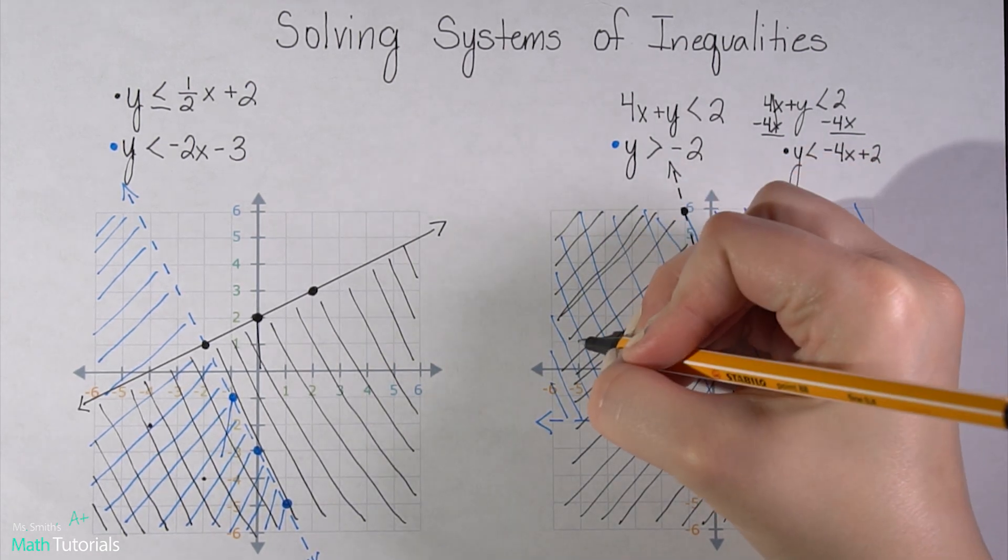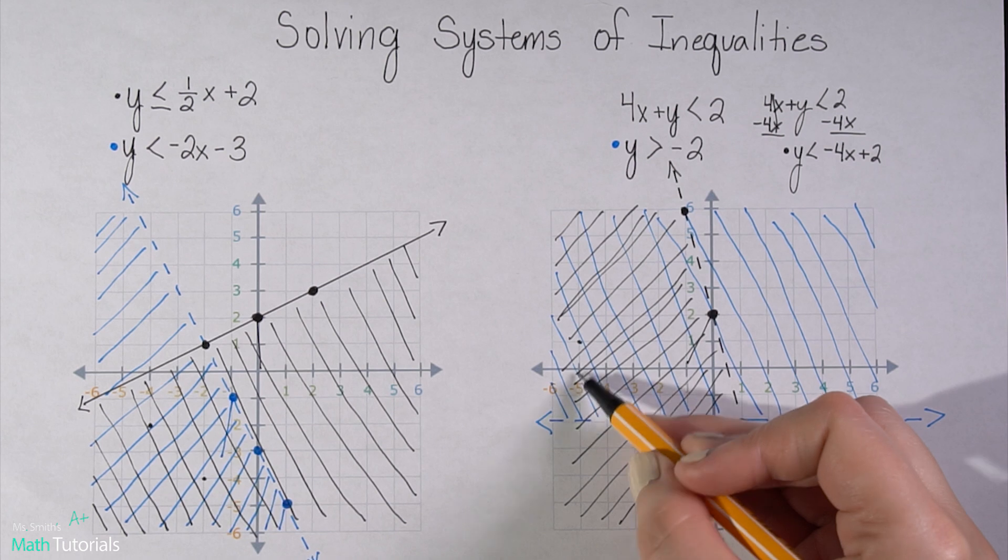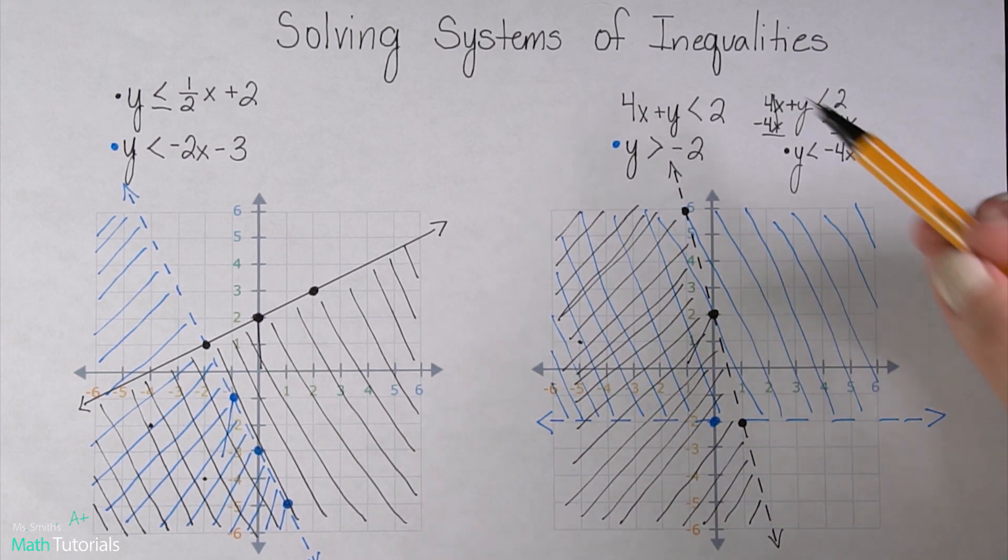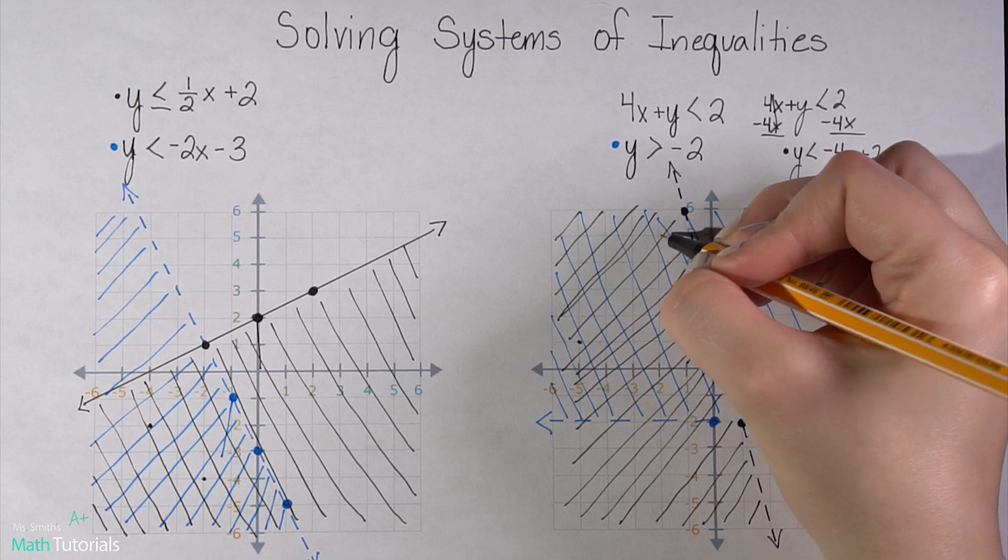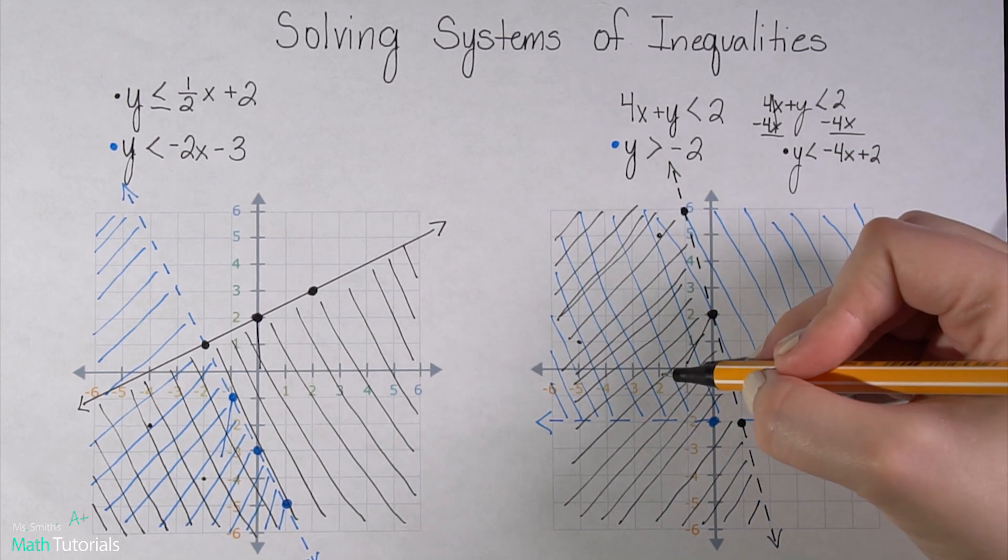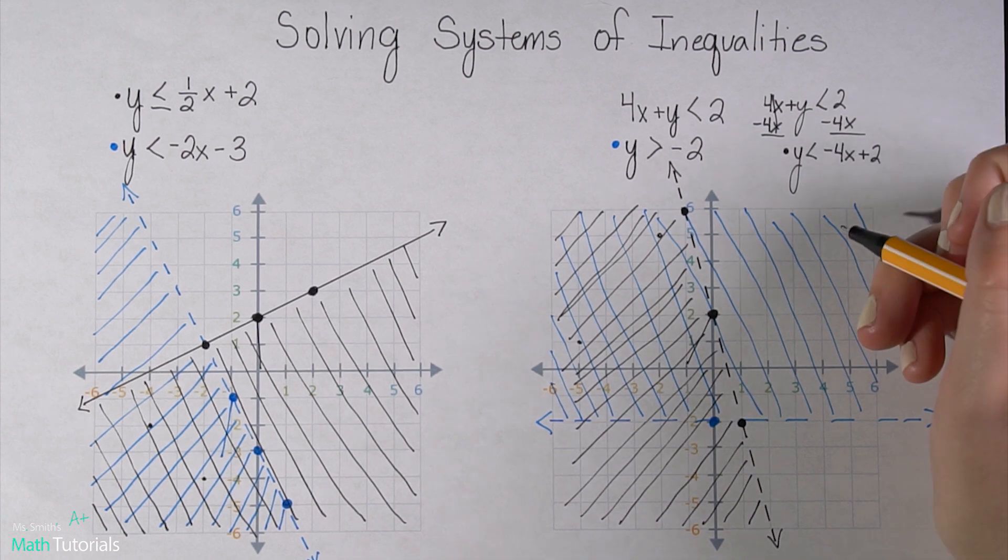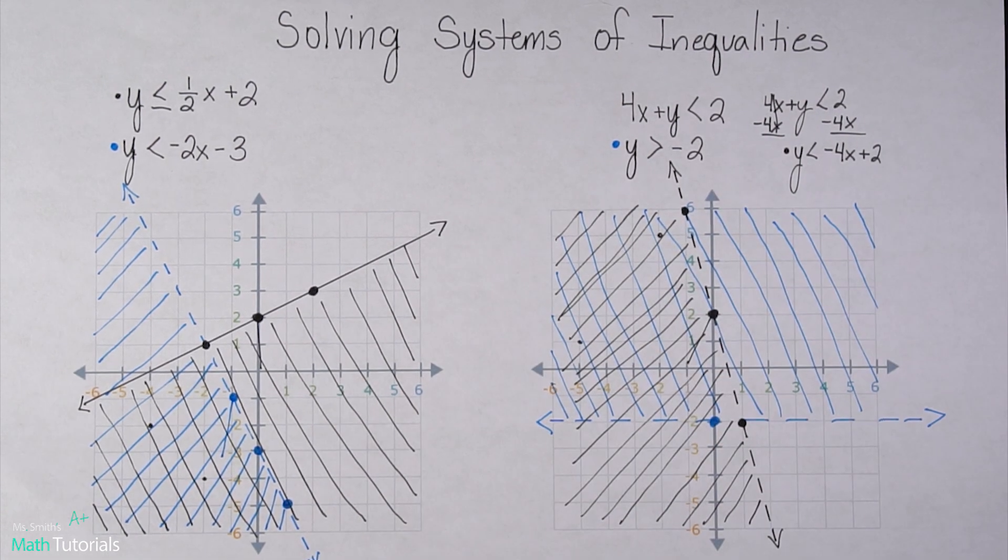So I could pick any point, I could do this point right here. Negative 5, positive 1. That would be a solution that would make this true. You could pick something up here, 2, 5. That would be a solution set as well. So just anything falling within that range would be an answer.